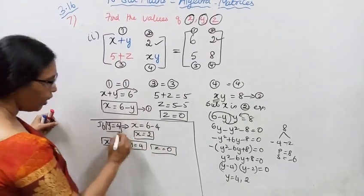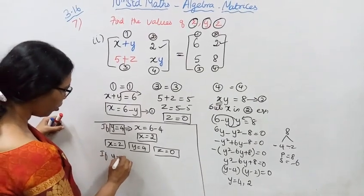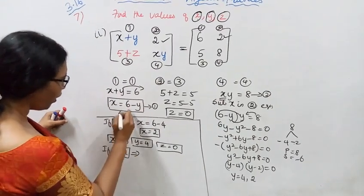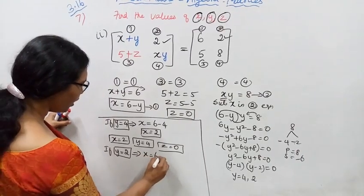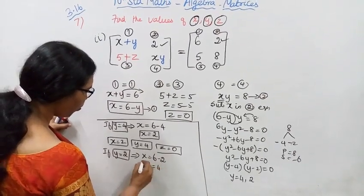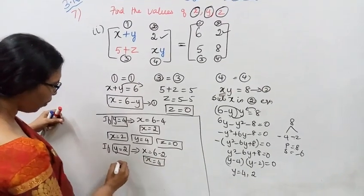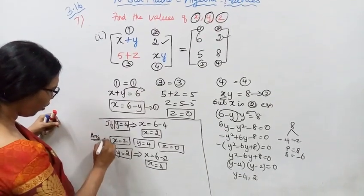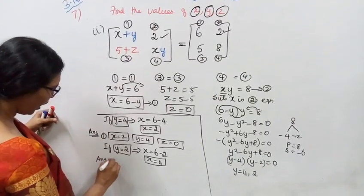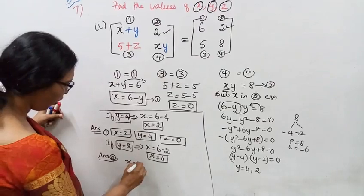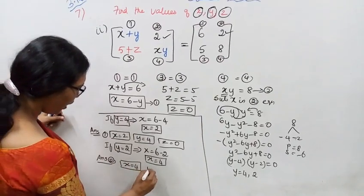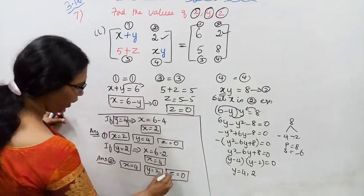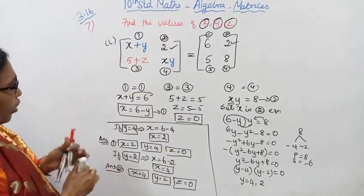When y equal to 2, substitute into the first equation: x equal to 6 minus 2, so x equal to 4. Second answer: x equal to 4, y equal to 2, z equal to zero.